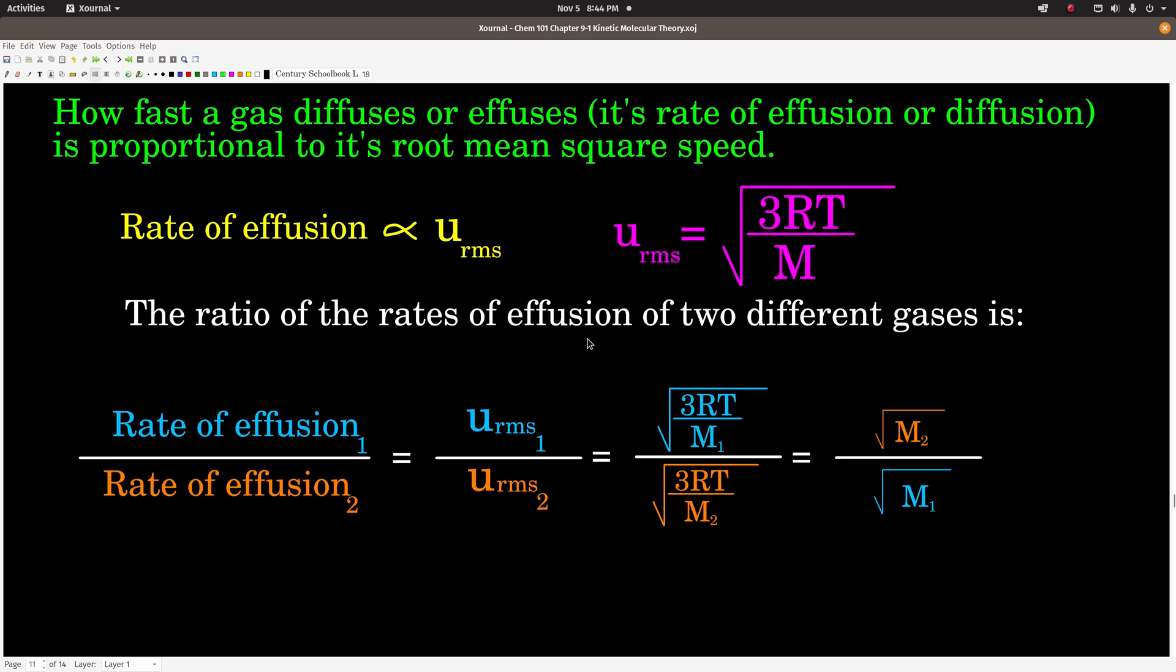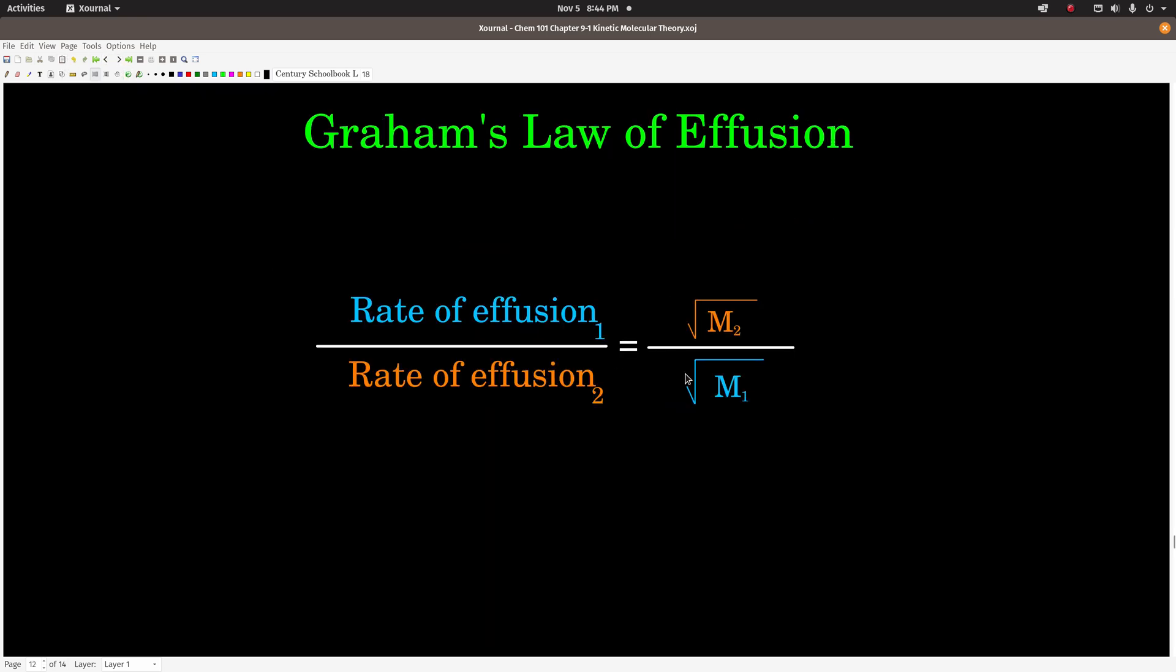If we take the ratio of the rates of effusion of two different gases, the constant of proportionality cancels. So the rate of effusion of gas 1 over the rate of effusion of gas 2 is equal to the root mean square speed of gas 1 over the root mean square speed of gas 2, which is equal to the square root of 3RT over M1 over the square root of 3RT over M2. Now notice the 3RTs cancel and we end up with this simple equation here: square root of M2 over the square root of M1. Notice it's inverted. This is called Graham's Law of Effusion. Put this on your card to use it. And what it says is that how fast one gas effuses compared to how fast another gas effuses is equal to the ratio of the square root of the molar mass of the second gas over the square root of the molar mass of the first gas. So watch out, see how they're inverted? People at first they tend to forget that.